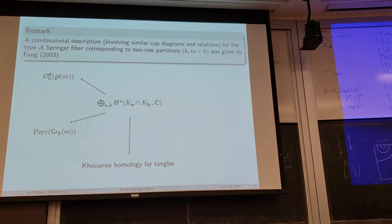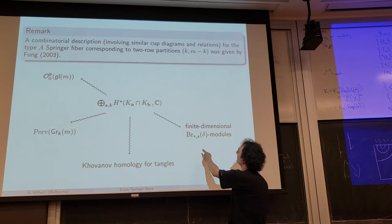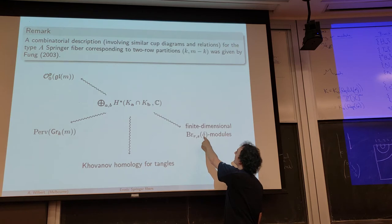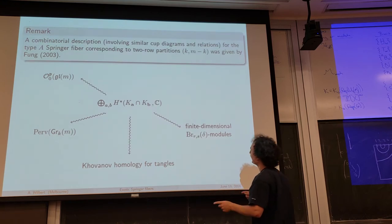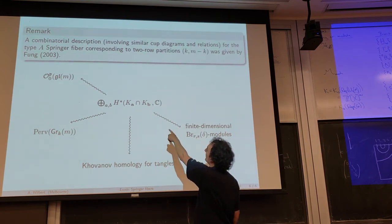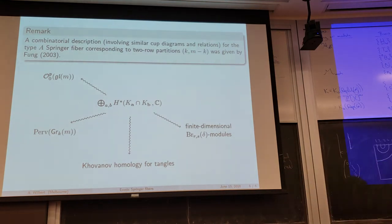There is also a connection to finite-dimensional representations of the wall of Prowell algebra — this already occurred in the talk this morning. The wall of Prowell algebra is a subalgebra of the Prowell algebra depending on some parameter. If you choose this parameter interestingly, the category is not semisimple, and it turns out you can describe it in a non-semisimple case using these convolution algebras coming from Springer fibers. It also relates to finite-dimensional representations of the general linear supergroup.